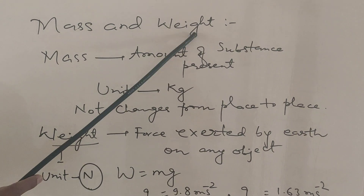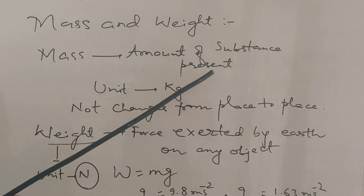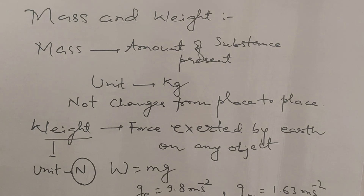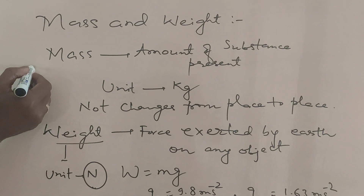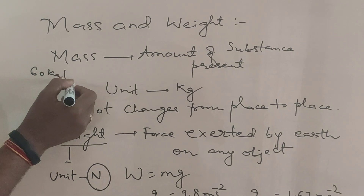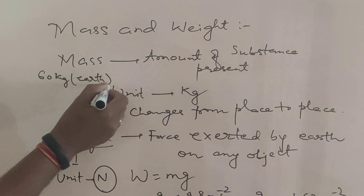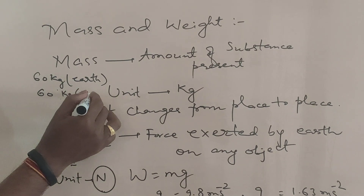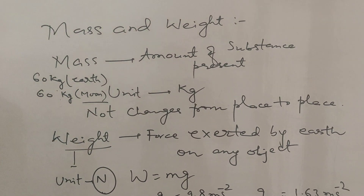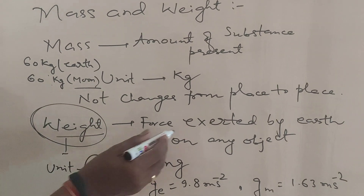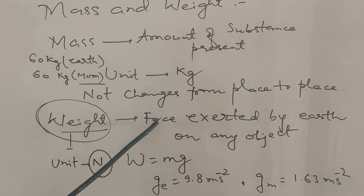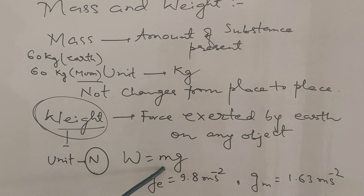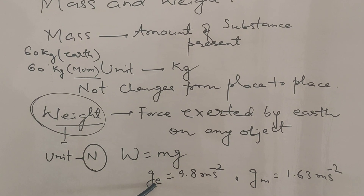Mass is the amount of substance present and its unit is kg. Mass remains the same everywhere — if an object's mass is 60 kg on Earth, it will also be 60 kg on the Moon. Weight, on the other hand, is the force exerted by Earth on any object, given by W = mg, where m is mass and g is acceleration due to gravity.